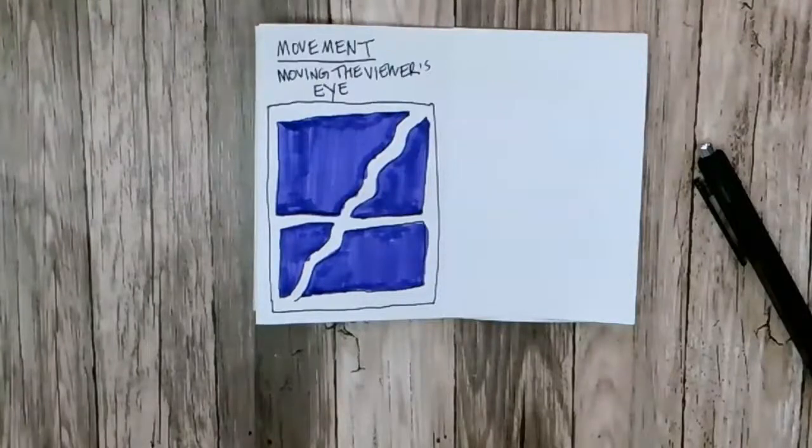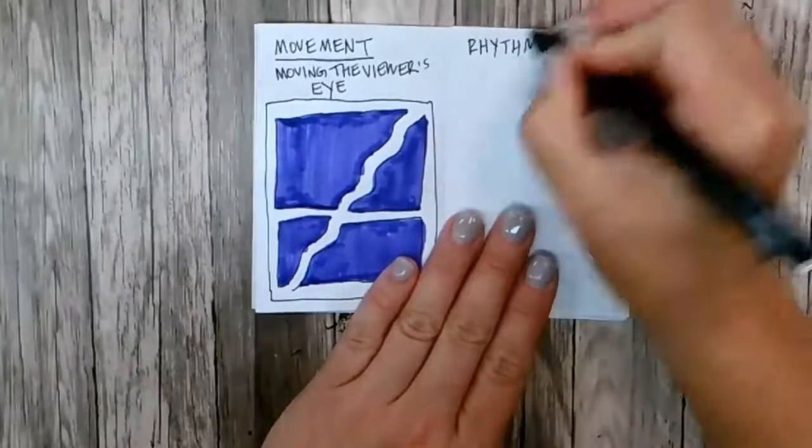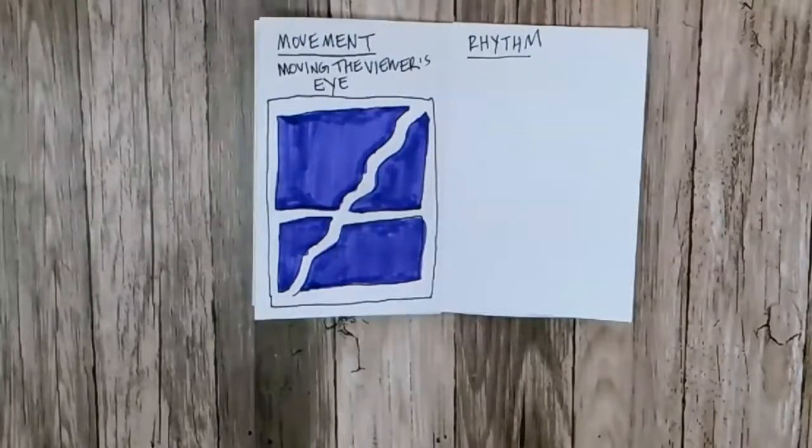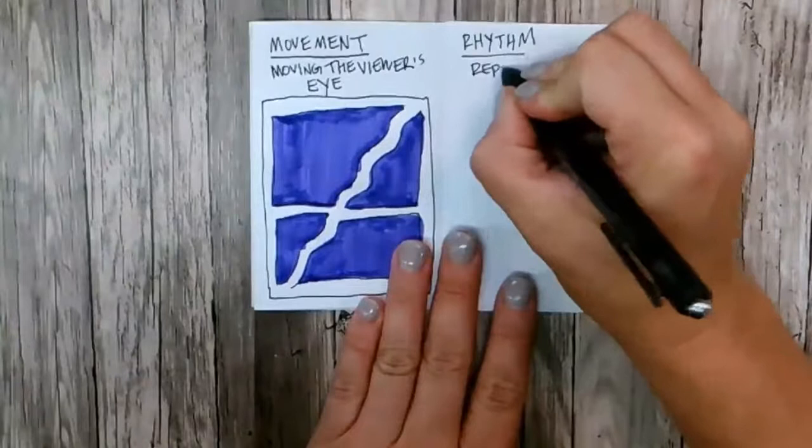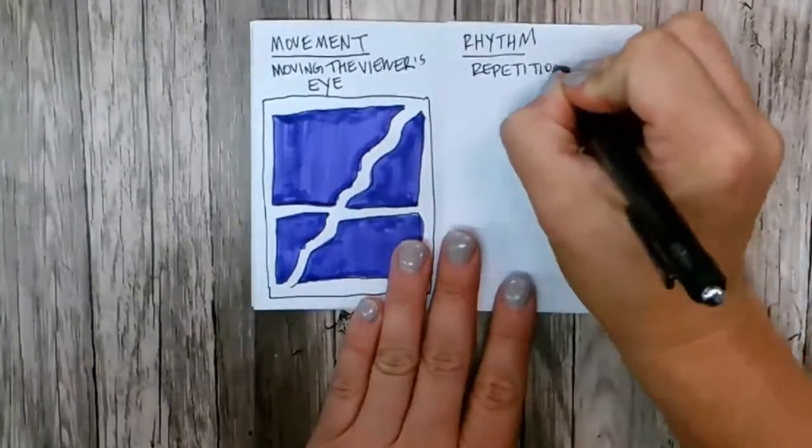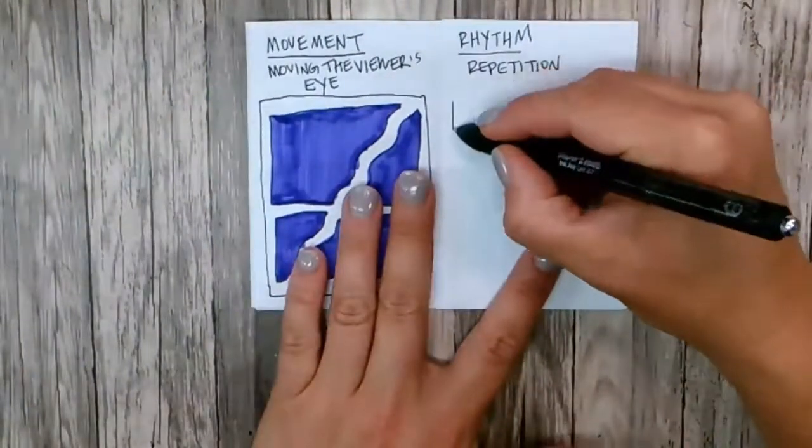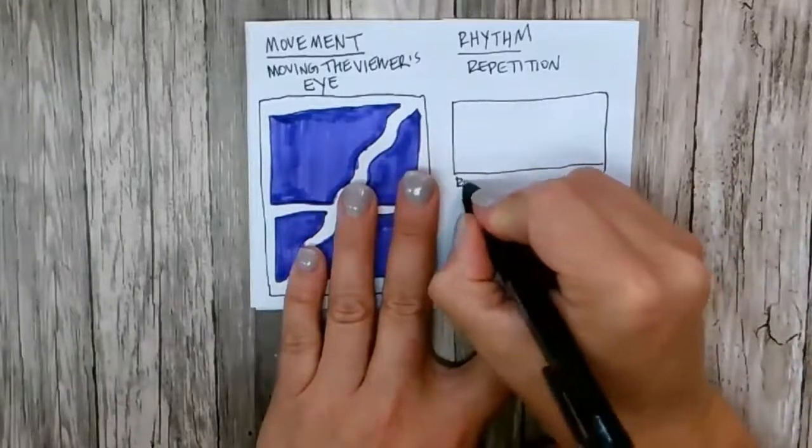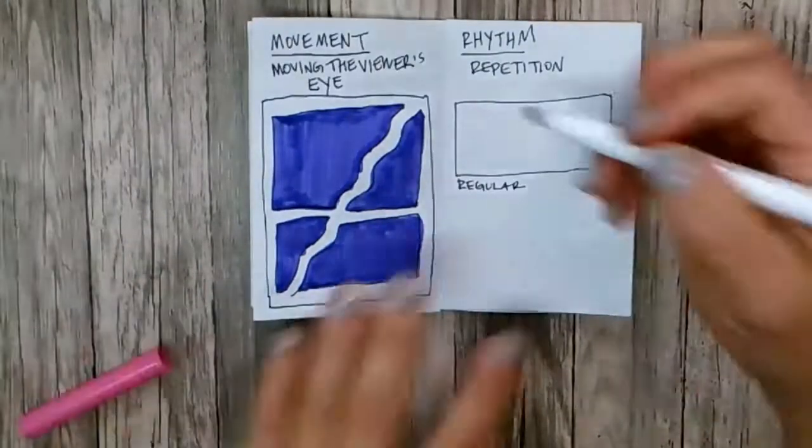The next one is rhythm. And rhythm is just repetition. And so we might have a regular rhythm, which maybe would be something like this.